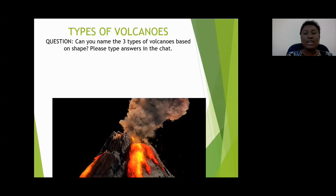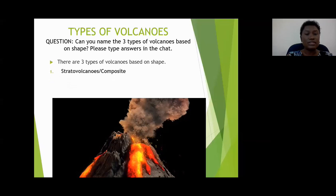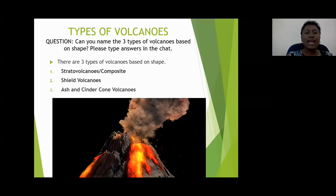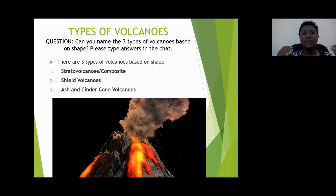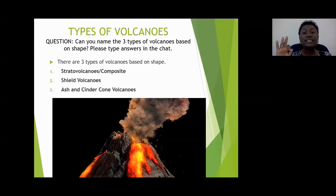One, we have strato or composite volcanoes. Two, we have shield volcanoes. And we also have ash and cinder cone volcanoes. Based on the volcano's shape, we have three main types: strato volcanoes, also known as composite volcanoes; shield volcanoes; and ash and cinder cone volcanoes. We're going to look at each of these individually and their characteristics.